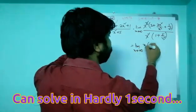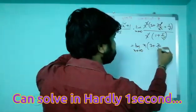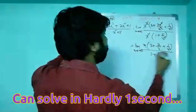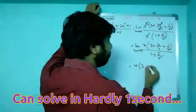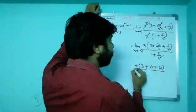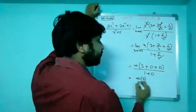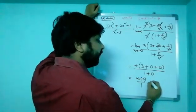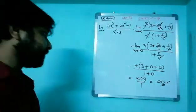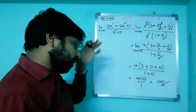The limit extends to infinity: x times (3 plus 2/x plus 1/x³) all divided by (1 plus 5/x²). Applying the limit as x tends to infinity: 2/x → 0, 1/x³ → 0, 5/x² → 0. So we get infinity times (3 + 0 + 0) divided by (1 + 0), which is infinity times 3 over 1. Infinity times any constant is still infinity, so the answer is infinity.